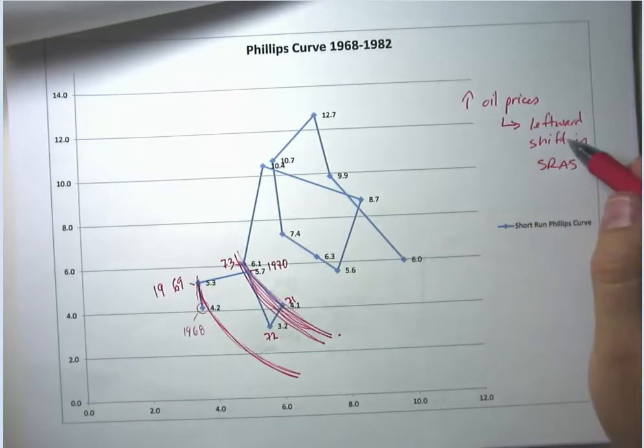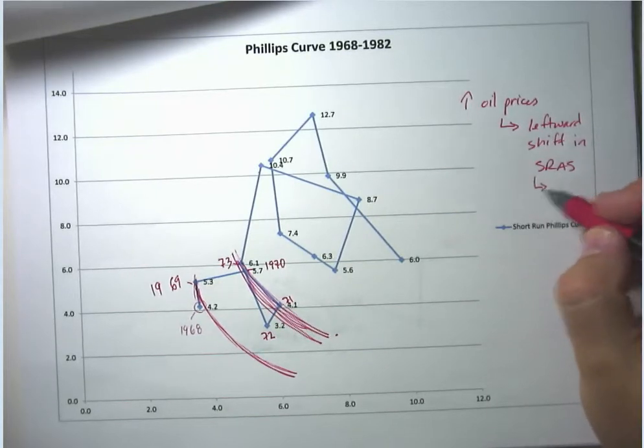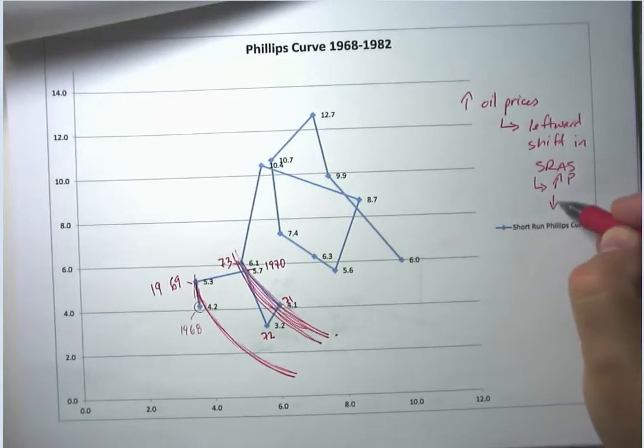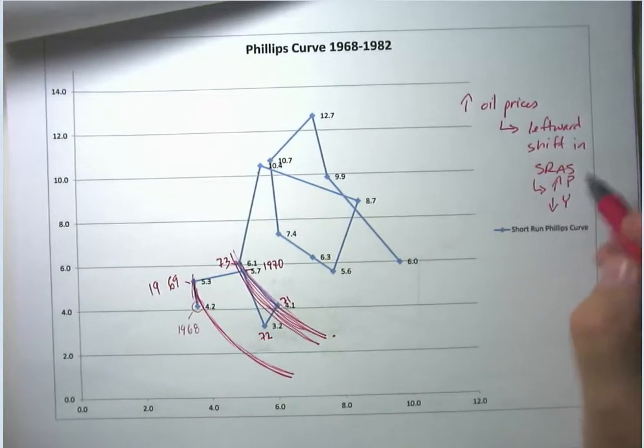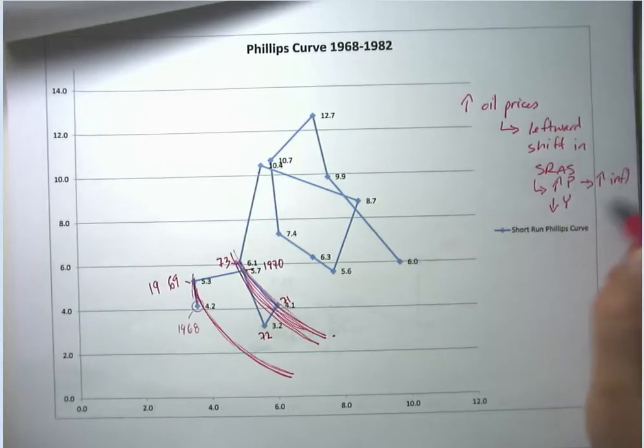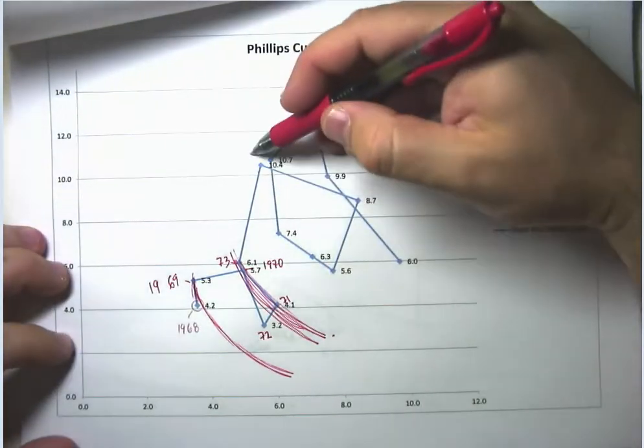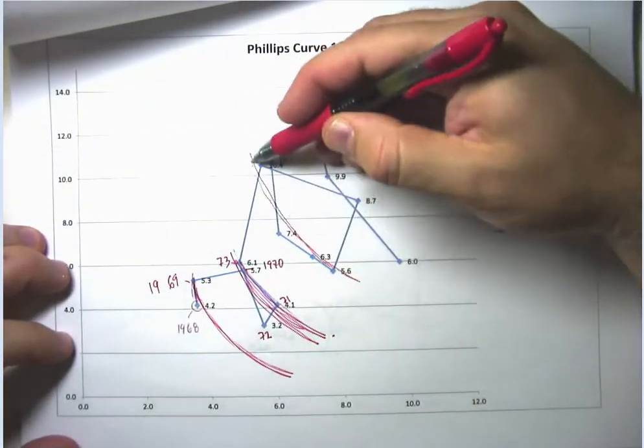As we had talked about in the previous video, a bad or leftward shift in short run aggregate supply means you have both higher prices and lower GDP which is the same as saying higher inflation and higher unemployment. So that's exactly consistent with being on a new Phillips curve out here.